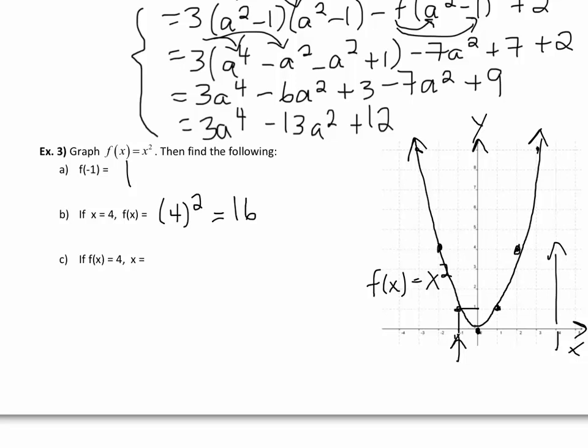Finally, if f(x) equals 4, what you would do is go and look at your y value now, which is 4, and find the corresponding x values. x could either be plus 2 or it could be negative 2.